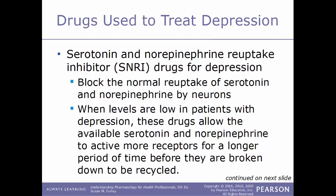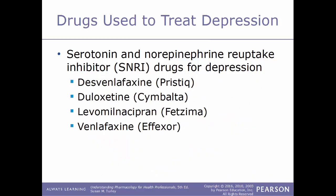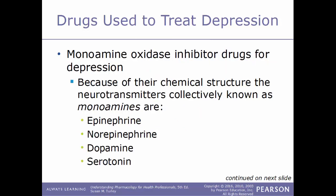SNRIs — serotonin and norepinephrine reuptake inhibitors — block the normal reuptake of both serotonin and norepinephrine. When levels are low in depression, these drugs allow the available serotonin and norepinephrine to activate more receptors for a longer period. Examples include desvenlafaxine (Pristiq), duloxetine (Cymbalta), levomilnacipran (Fetzima), and venlafaxine (Effexor).